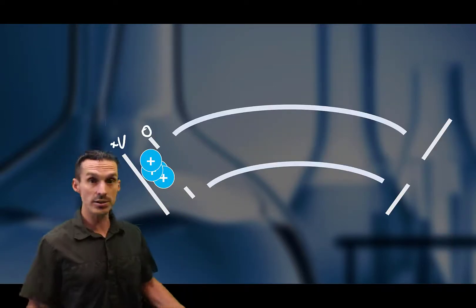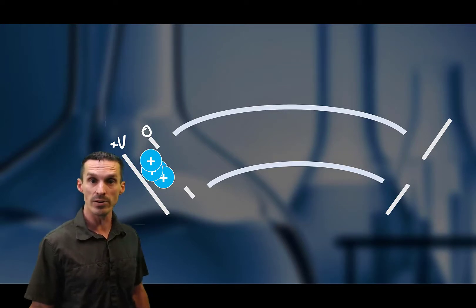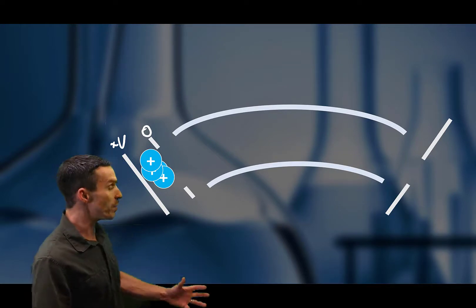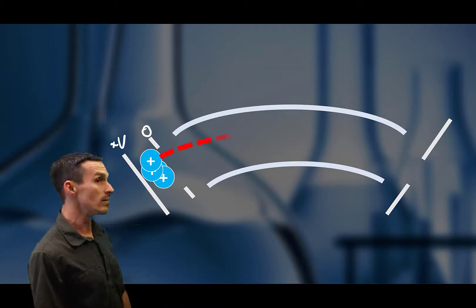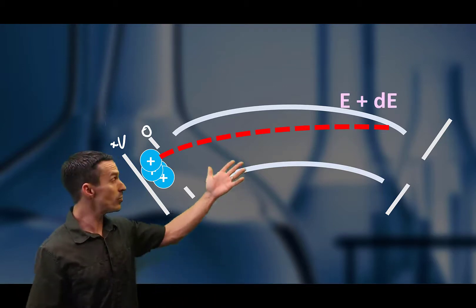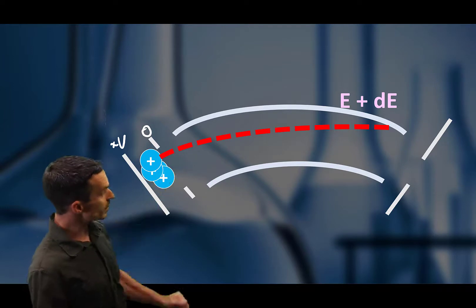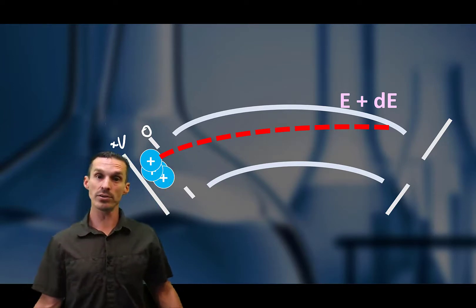Here's a bunch of ions. Let's just say that they all have the same m over z, but they have that Boltzmann distribution. So some of the ions already have a little bit of energy. That means the ones with too much energy are going to be forced a little bit on the high end. They'll strike the top of the plate.